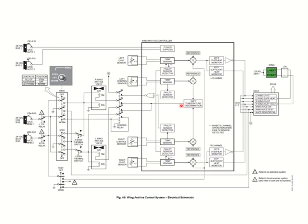The control relay being energized in normal mode also puts power to the control part of the wing anti-ice controller. The controller varies how much current flows through the torque motor to modulate the valve, based on inputs from the left and right control sensors. A discriminatory circuit takes the highest reading of those two and varies the current to the torque motors accordingly. Once sufficient heat is achieved, the sufficient heat monitor sends an output to the DCU and illuminates the sufficient heat light.